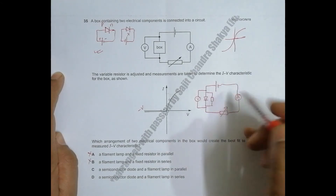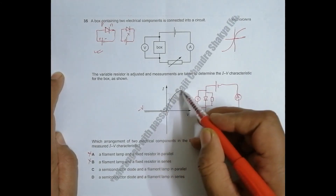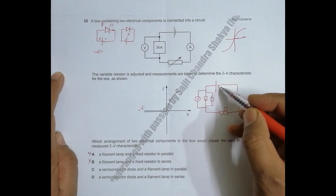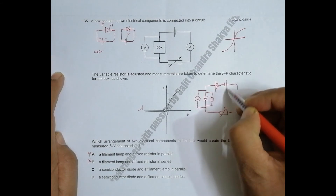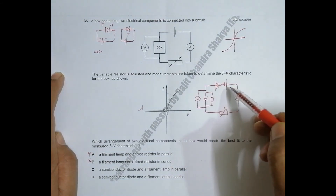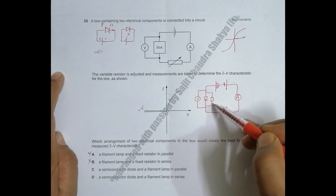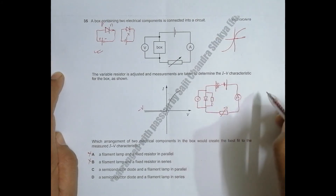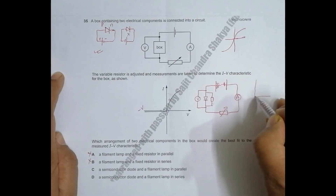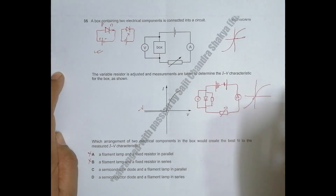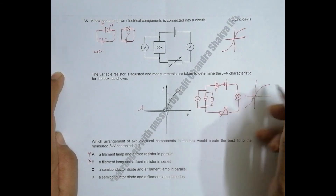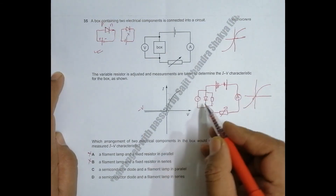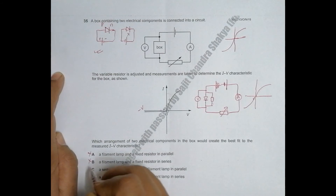In the forward connection the graph will look something like this. But if I reverse it, current does not flow through the diode but does flow through the resistor. So in reverse, the graph should again show some current flowing, which means the parallel arrangement does not match the IV characteristic where reverse current is zero. So the parallel arrangement is not quite right.